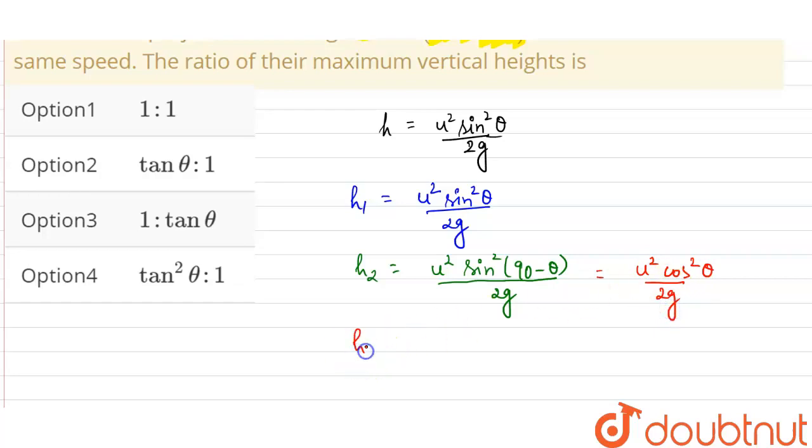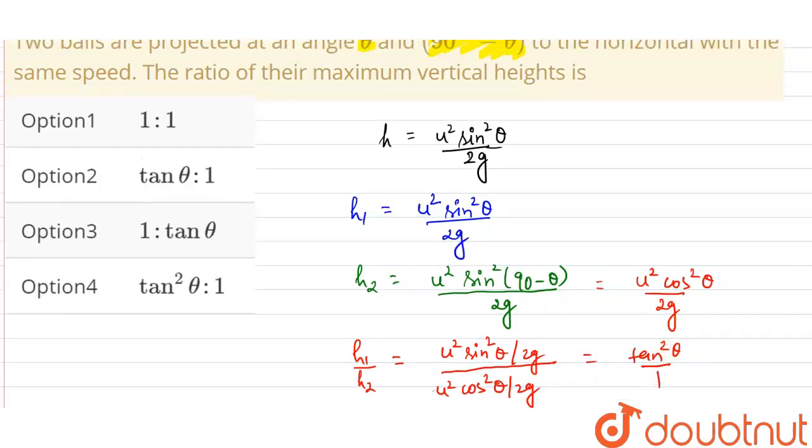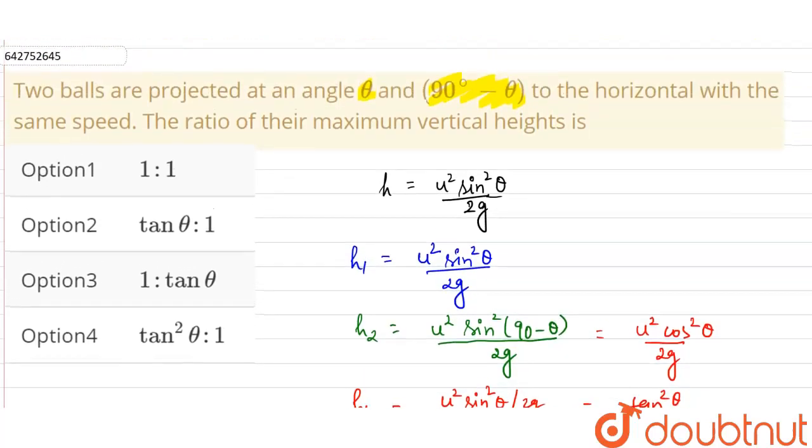Now h1 upon h2 will be the ratio of the heights: u square sine square theta divided by 2g divided by u square cos square theta by 2g. So it will be tan square theta upon 1. The ratio comes out to be tan square theta is to 1.